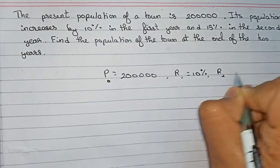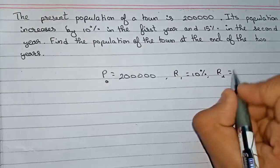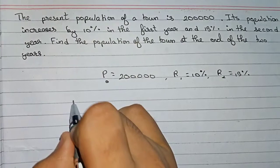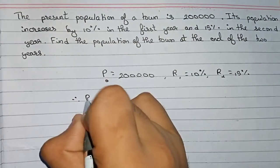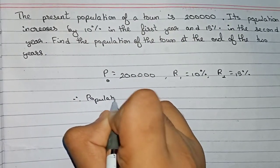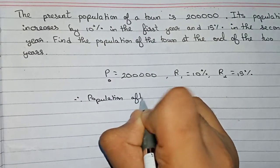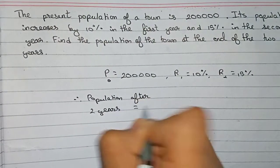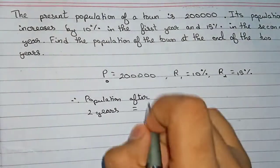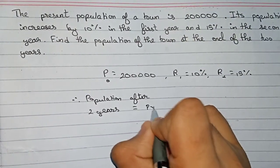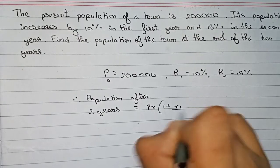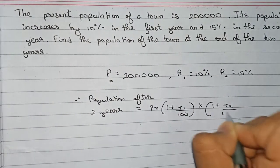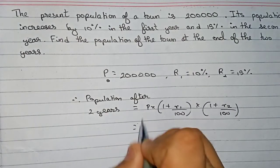And R2 equals 15 percent. In this question, time is not needed, so therefore you can write population after two years. It will be the same formula which we are doing for compound interest: that is principle into 1 plus R1 by 100 into 1 plus R2 by 100.